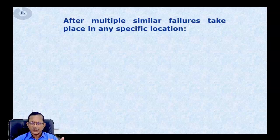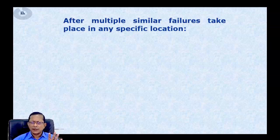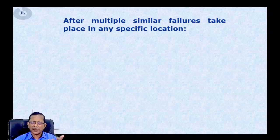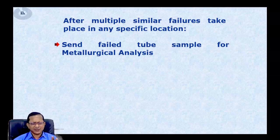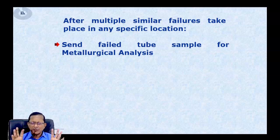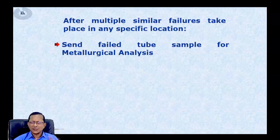It is only when there are frequent or multiple failures in a specific zone — similar failures — that people start digging into why this keeps happening. Usually, we send a tube sample for metallurgical analysis to a laboratory where they conduct various tests.